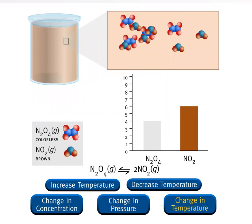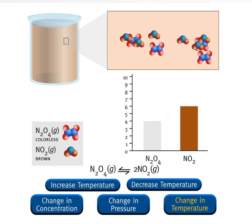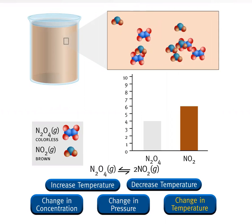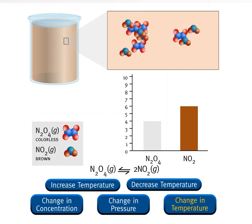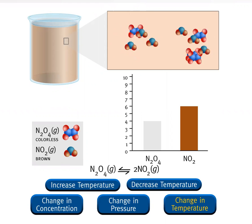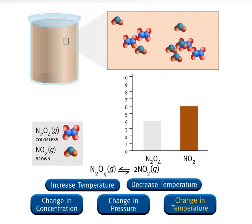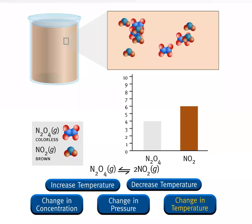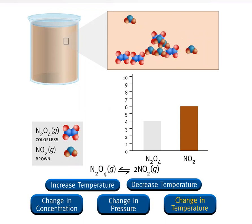Consider the following reaction at equilibrium: N₂O₄ in equilibrium with nitrogen dioxide, NO₂. Under the given reaction conditions, the ratio of N₂O₄ molecules to NO₂ molecules is 2 to 3 at equilibrium, as shown in the microscopic view. Because NO₂ is a brown gas, the equilibrium mixture has a brown color, as shown in the macroscopic view.